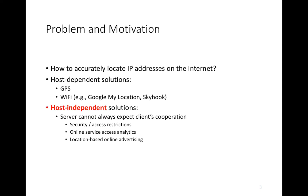Let's talk about the problem and motivation. Following up from last time, we saw that there were many different ways of doing IP geolocation, and these different ways varied in their accuracy and the granularity they provided. The question we might ask is: how can we accurately locate IP addresses in the Internet? We discussed host-dependent solutions such as GPS or Wi-Fi. However, there are host-independent solutions — times when we wish to find the geolocation of a device we don't control and the device isn't willing to give us its actual location.